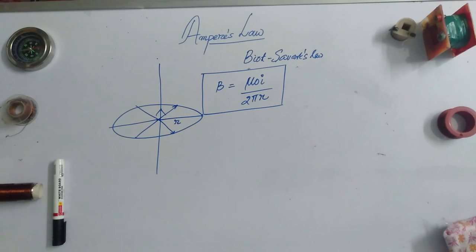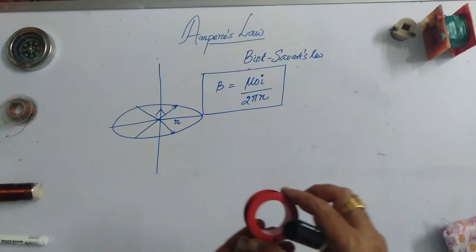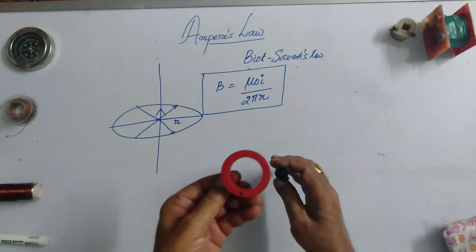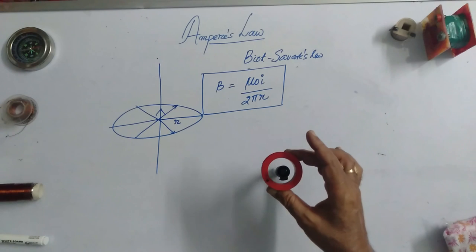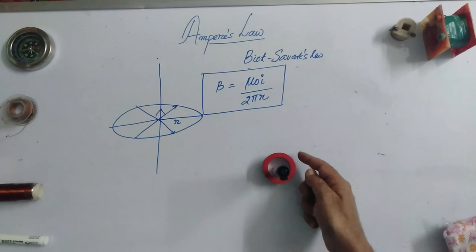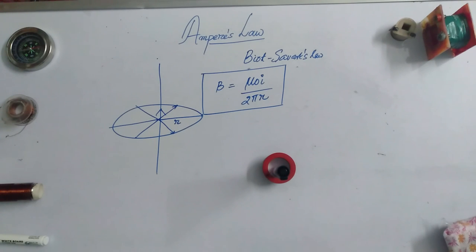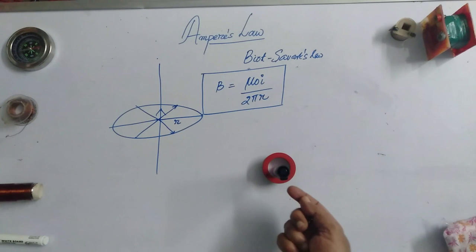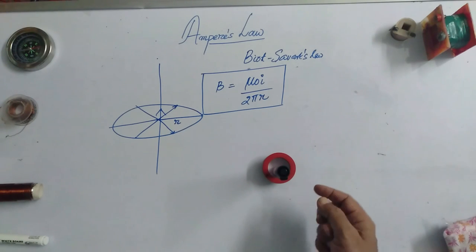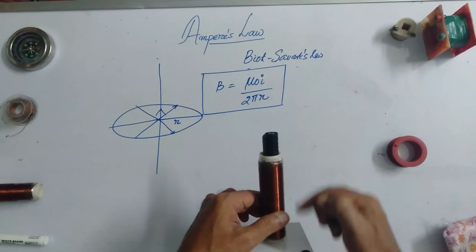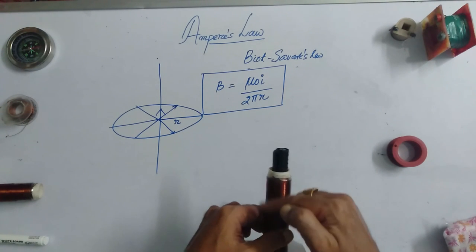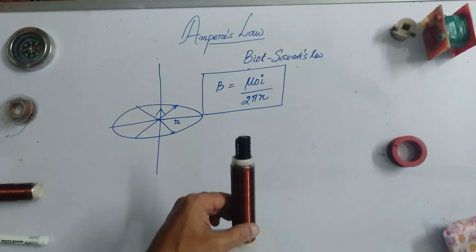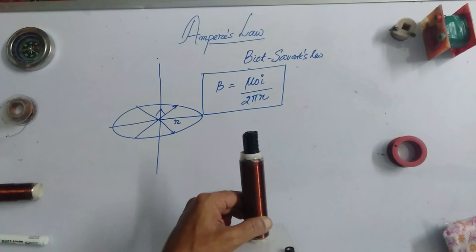We can say that this magnetic field has a cylindrical symmetry. If I take this as the current-carrying conductor and on this cylinder, at any point, the magnetic field is equal to μ₀i / 2πr. If I take a cylinder like this with the current-carrying conductor, then at any point on this cylinder you will have the magnetic field equal to μ₀i / 2πr.